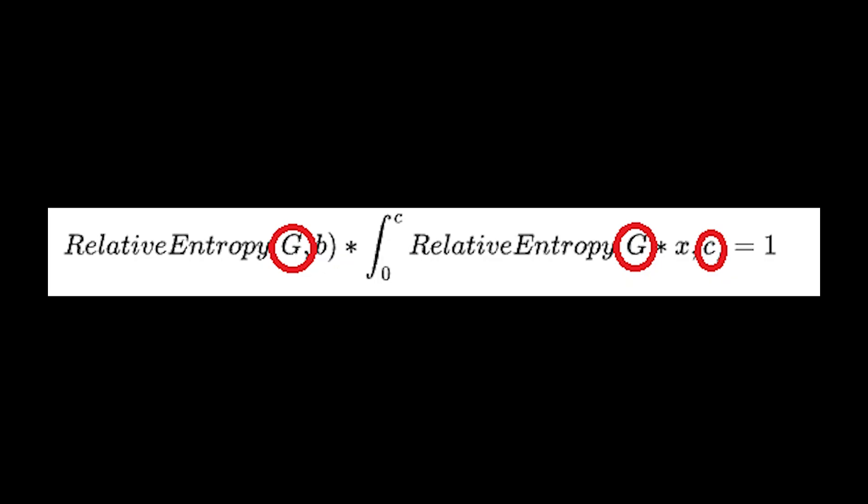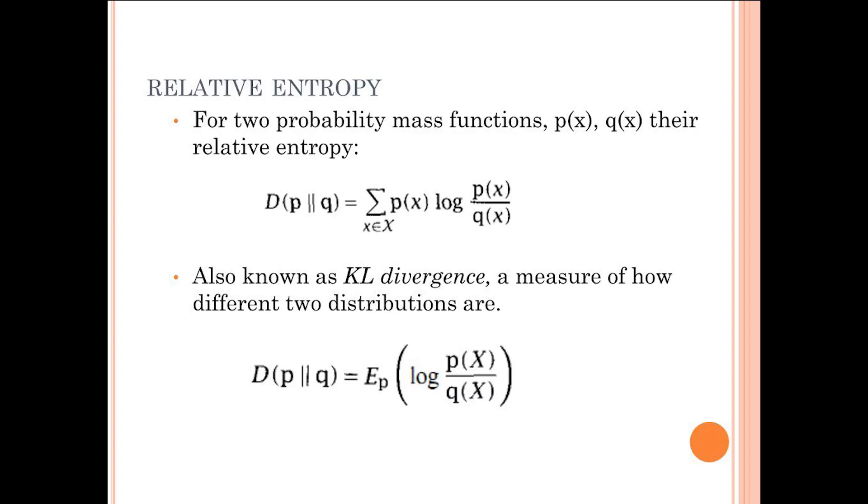The second and third constants are of course easily recognized as the gravitational constant and the speed of light. The relative entropy function requires some explaining.